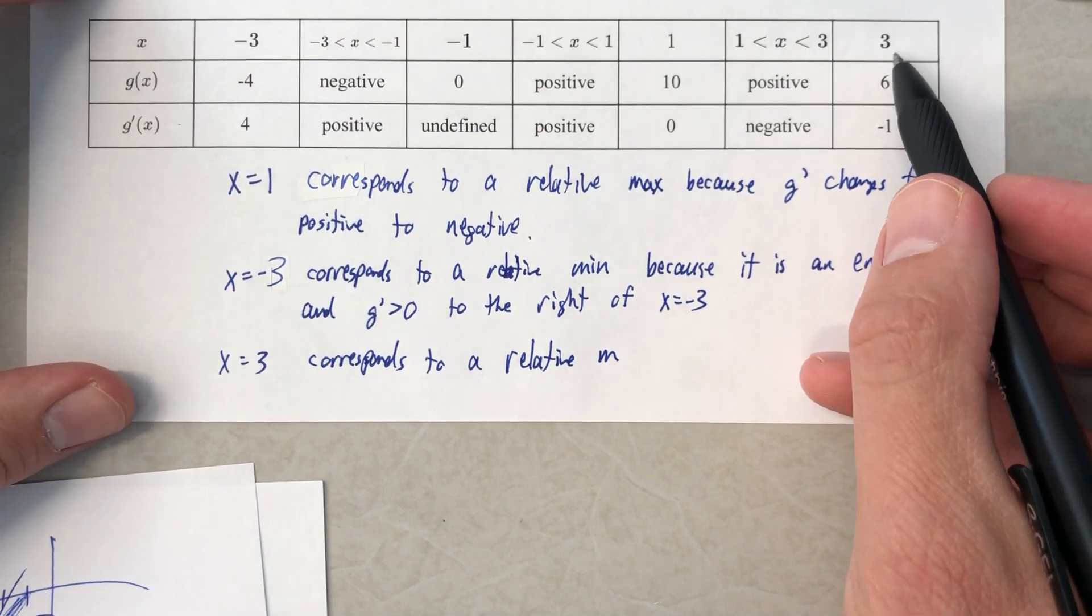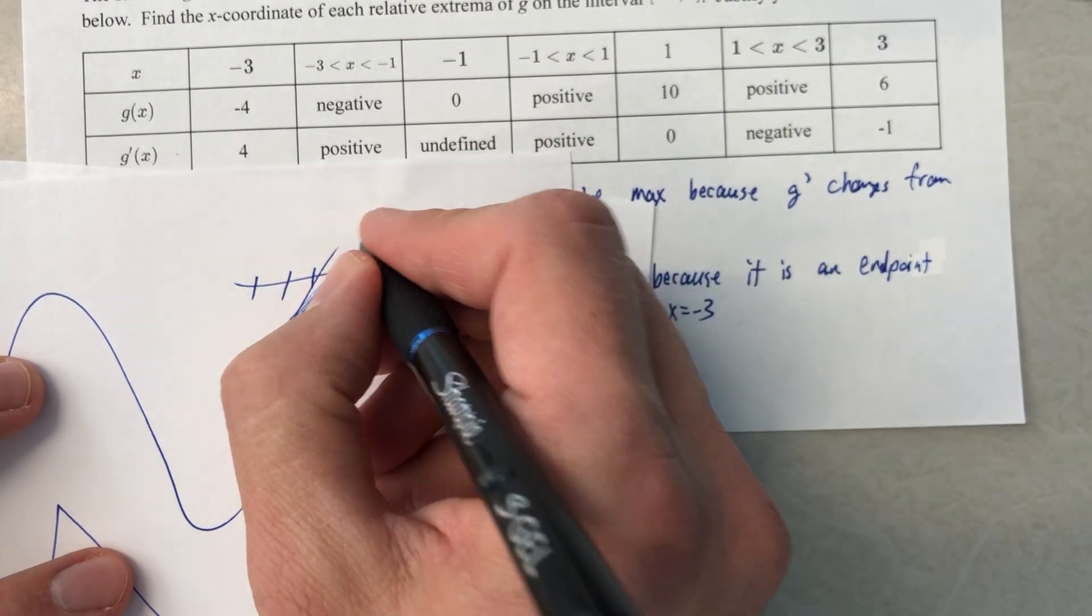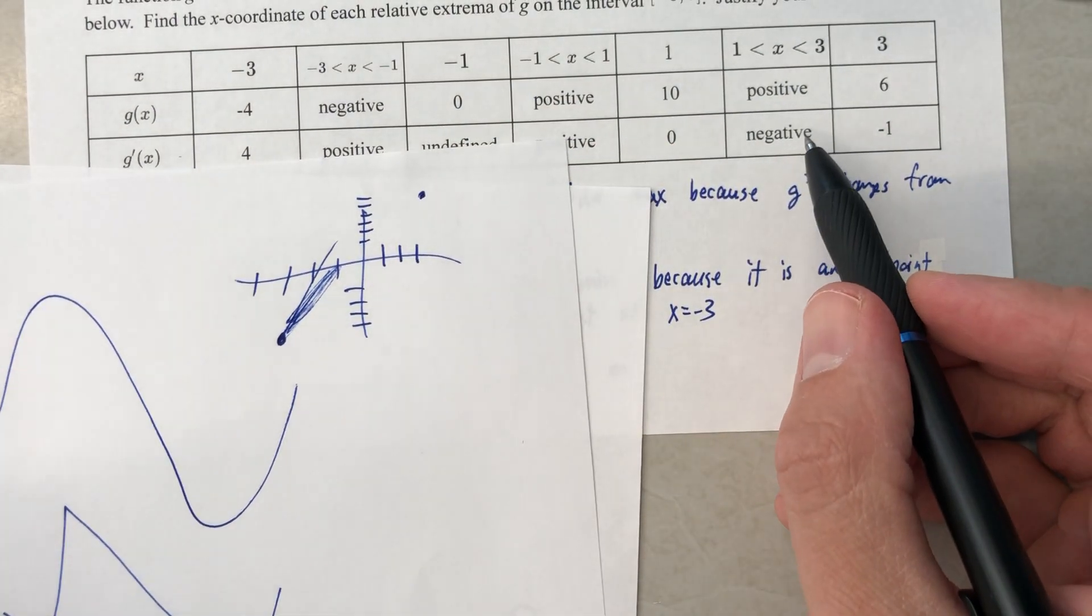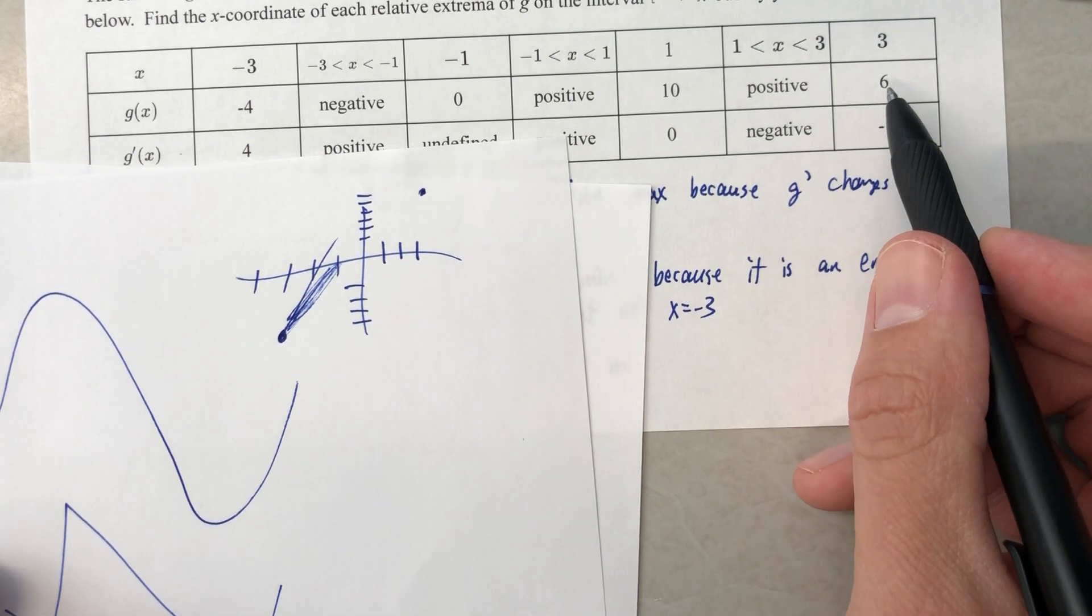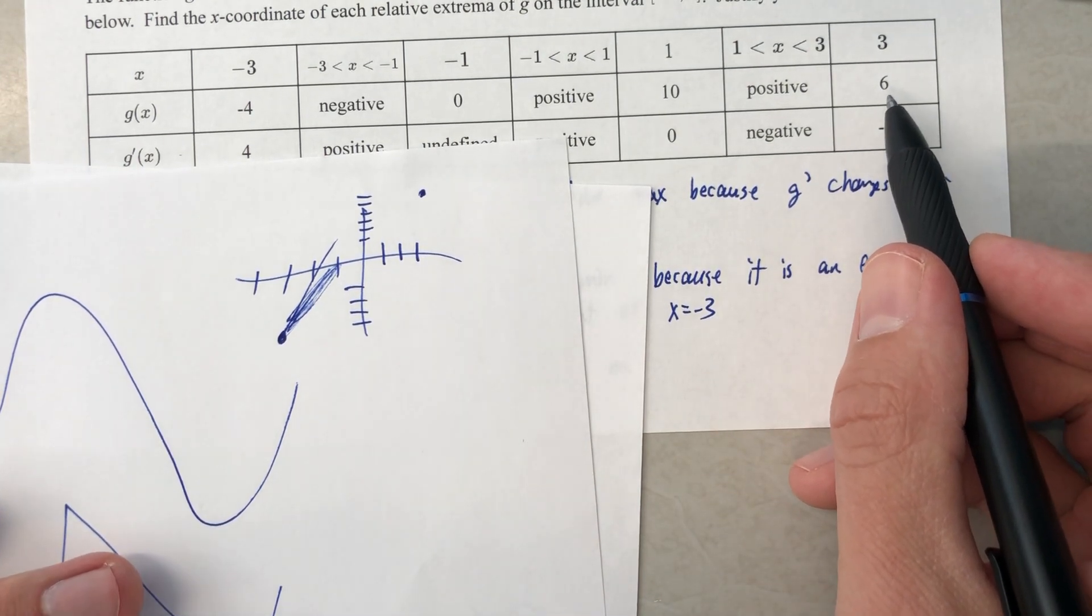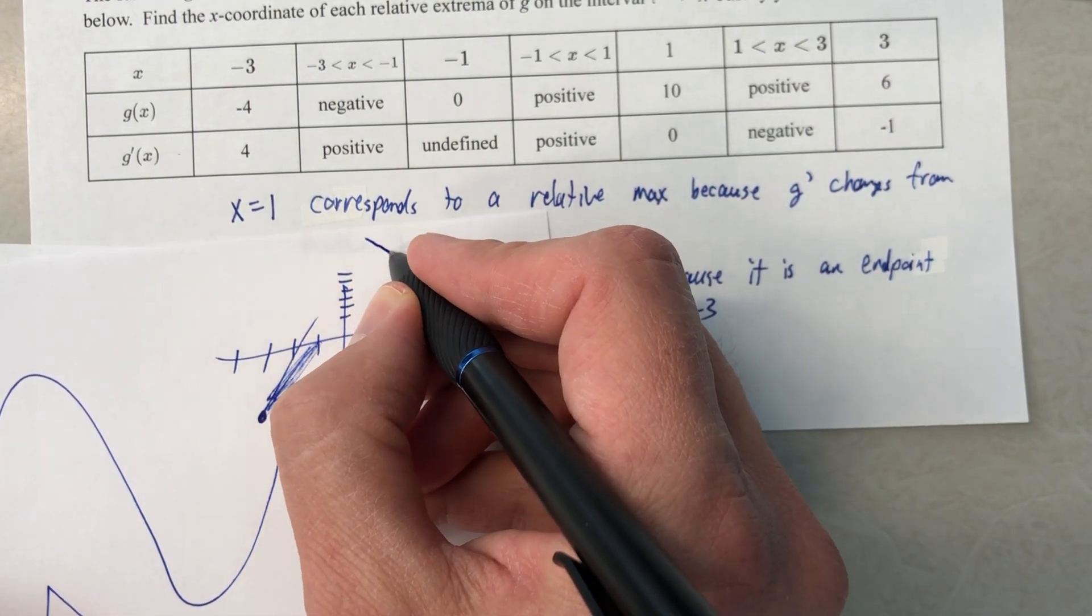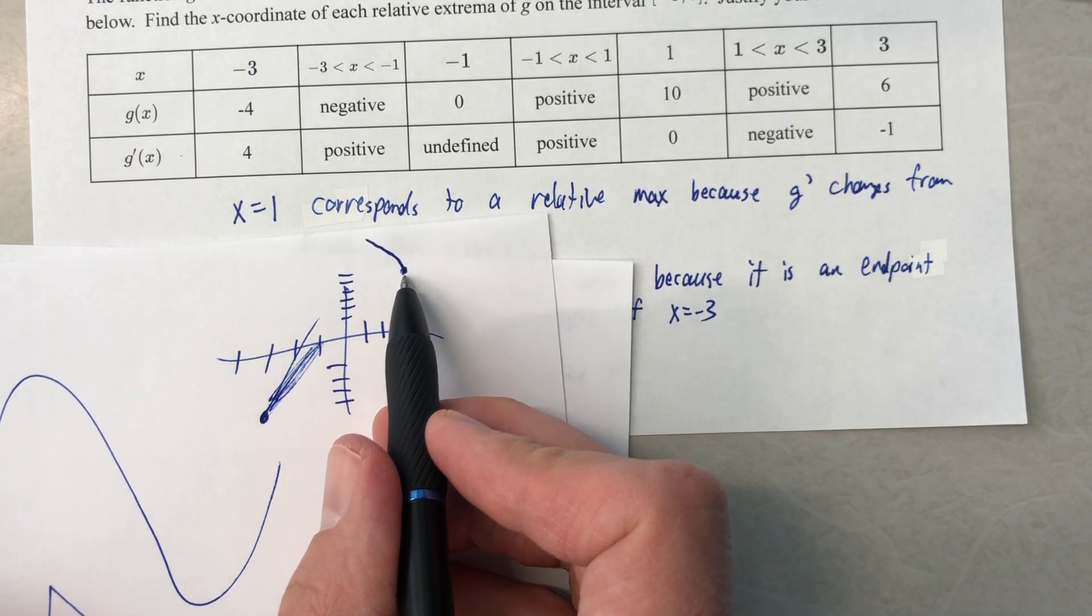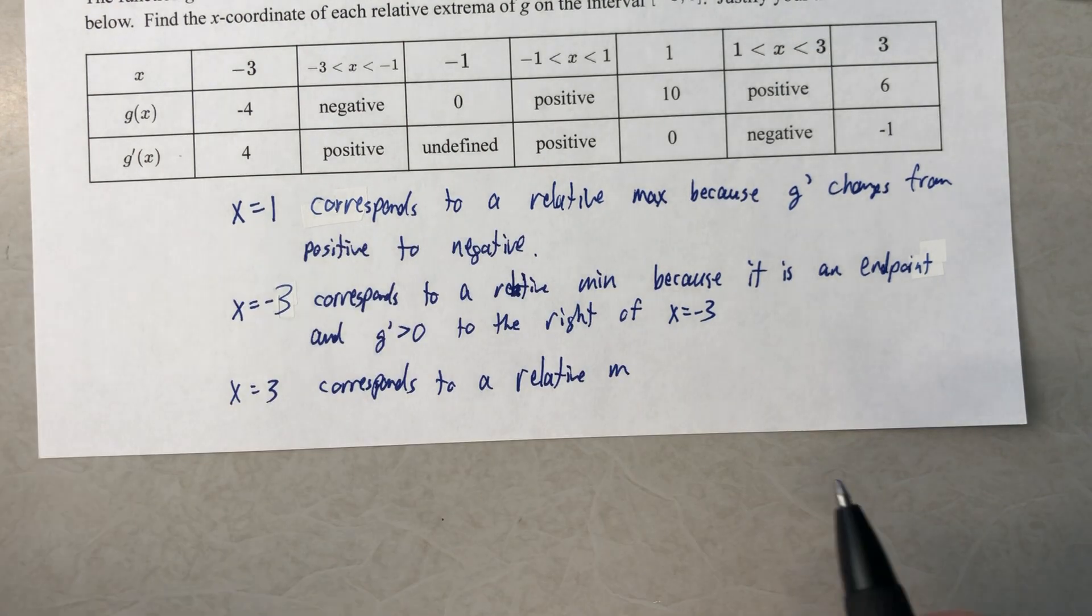At 3, picture it if you need to, we have an output of 6. And the derivative is negative going into that 6. So going into this value, we have a function that is decreasing. So this one is also a minimum. It is not the minimum, but it is a relative minimum.